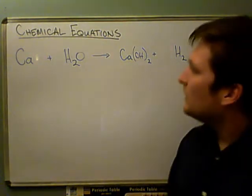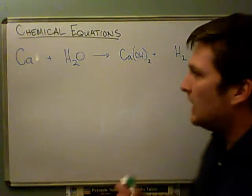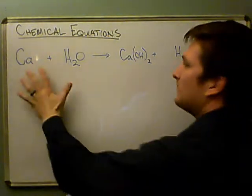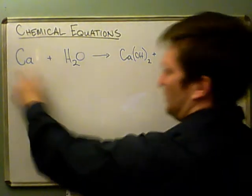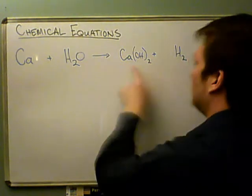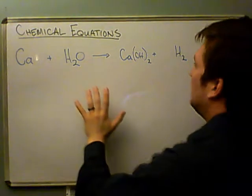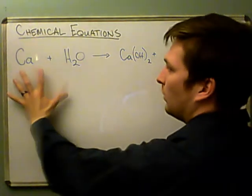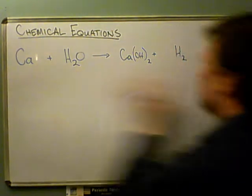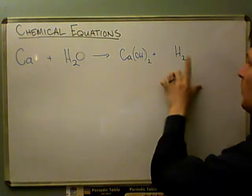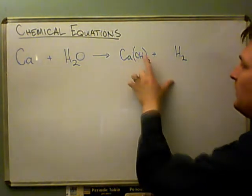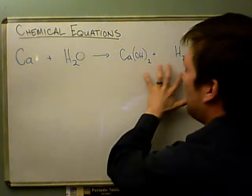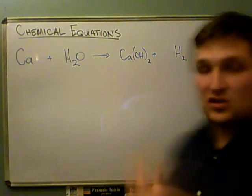So the problem with this is that it's not balanced. If you were to count up the atoms of calcium over here, there's one atom of calcium and there's one atom over here. So we're good. Now let's count up the hydrogen atoms. Right now we have two total hydrogen atoms over here, but over here we have one, two, and three, four.